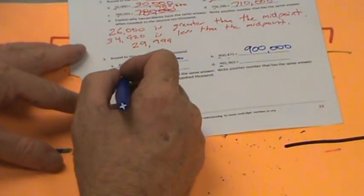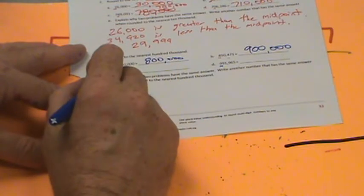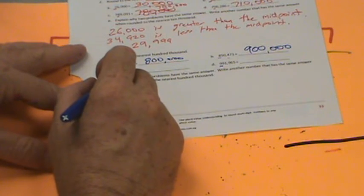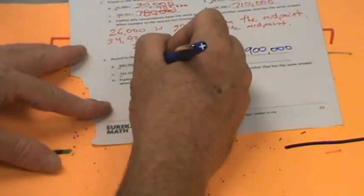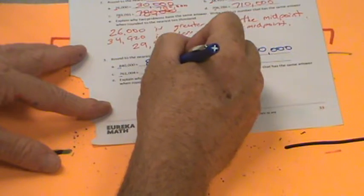Let's go over here to 761,004. Remember, 5 is our kind of magic number there. If it's 5 or more, this is going to go up 1, and everything else just becomes 0. So it's 800,000.